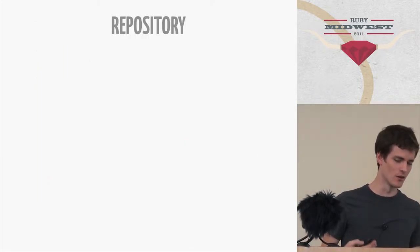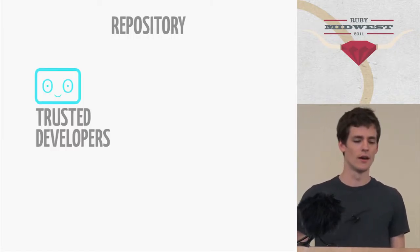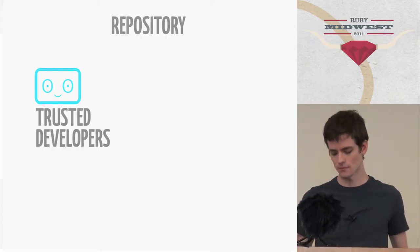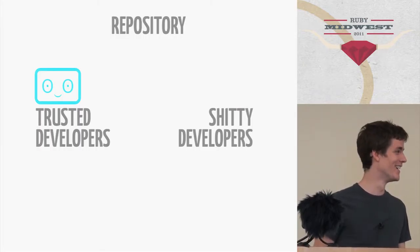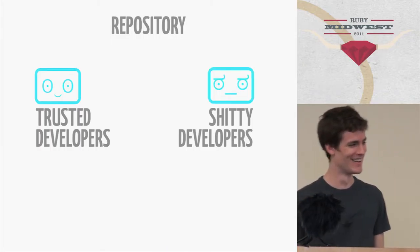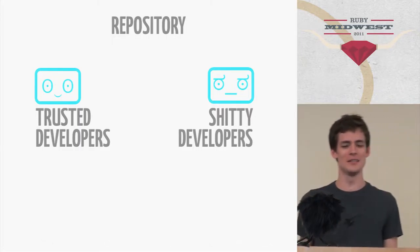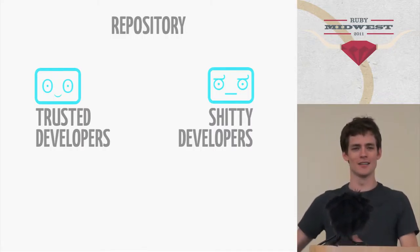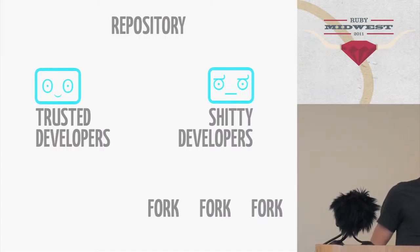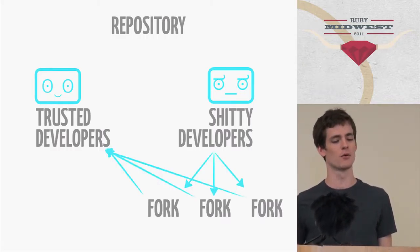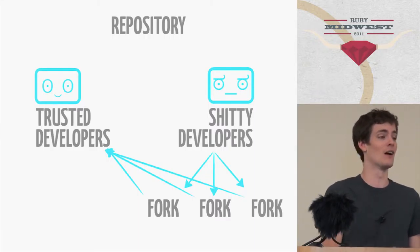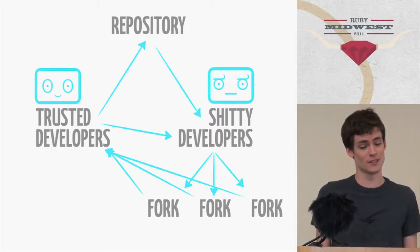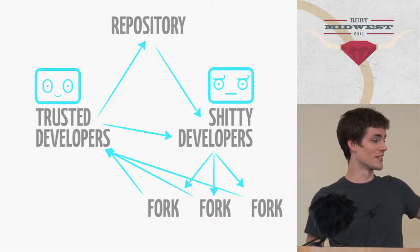More likely, I see this in large enterprise companies. You have a repository, a group of trusted developers with full write access who can do whatever they want, and then another group — I call them 'shitty developers' because they must be shitty if they're on the separate side — who only get read access. They all have to fork their own project from the main repository, those forks go back to the trusted developers to figure out if it's good, and if not it goes back. If you see a chart like this in your organization, something is messed up.